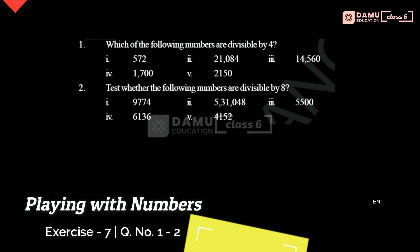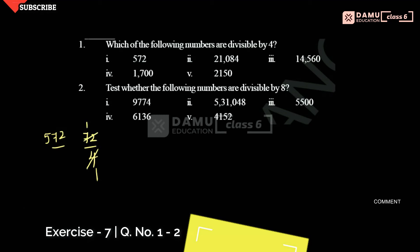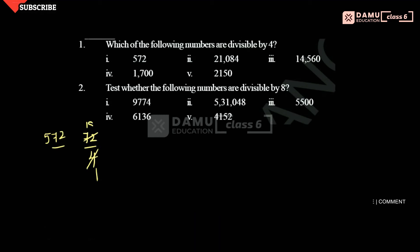So here, let's take 572. The last two digits are 72. Is 72 divisible by 4 or not? We have to check. 4 times 18 is 72, so yes, it is divisible. Therefore, 572 is divisible by 4.